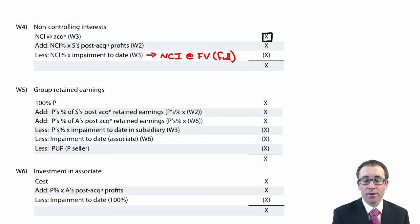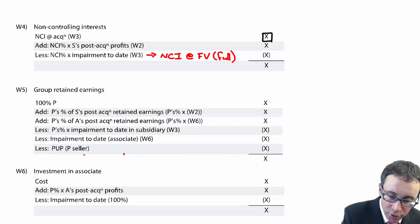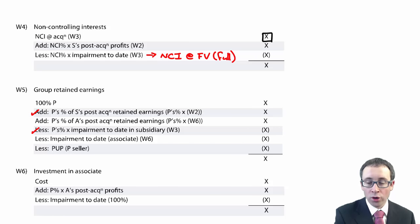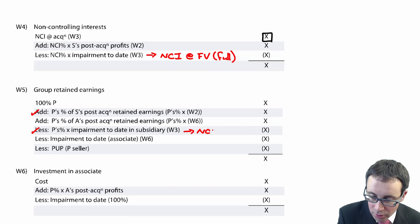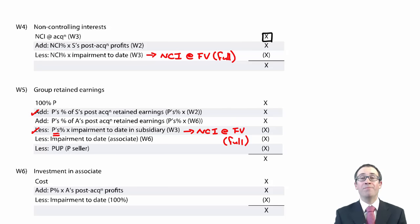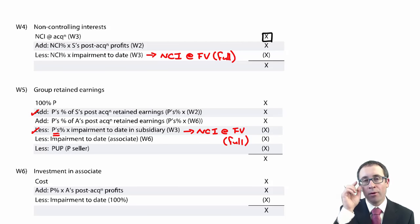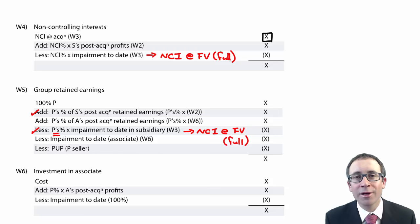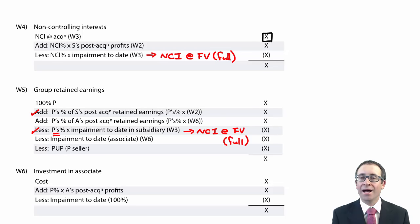You then add on your share of S's post-acquisition profits, and also deduct your share of any impairment to date. If the NCI is at fair value (full goodwill method), take P's share of the impairment. If the proportionate share of net assets method has been used, take the impairment in full — there's no need to take P's share because no goodwill was allocated to the NCI.